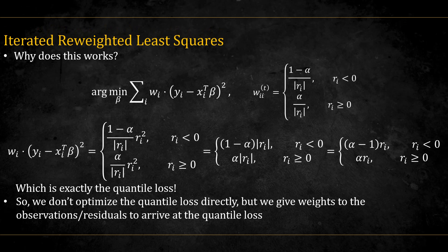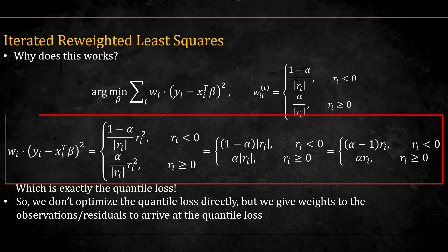Now, why does this work? Well, if we place these weights back in the objective function, we see that we actually get the quantile loss. Pause the video to verify for yourself. Notice that in the last stage, I replaced Ri in absolute value with the negative Ri, but swallowed the minus sign by swapping 1 minus alpha with alpha minus 1. So, although we don't optimize the quantile loss directly, by the use of weights, we do arrive at the quantile loss.